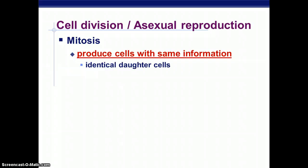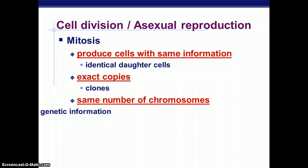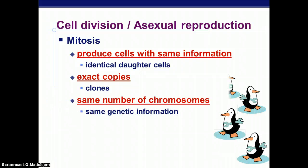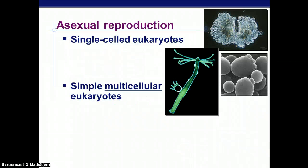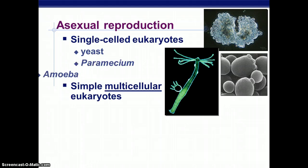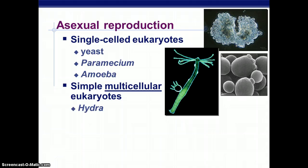So a review on mitosis: we do mitosis in order to produce cells with the same information that are exact copies and have the same number of chromosomes. Mitosis is also used in asexual reproduction, especially in single-cell eukaryotes like yeast, paramecium, and amoeba, or simple multicellular eukaryotes like a hydra.